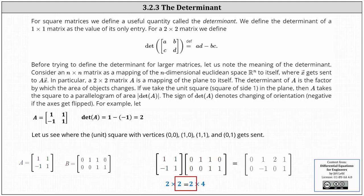Welcome to a lesson on the determinant of a matrix. For a square matrix we define a useful quantity called the determinant. We define the determinant of a one by one matrix as the value of its only entry. For a two by two matrix, the determinant is equal to a times d minus b times c.